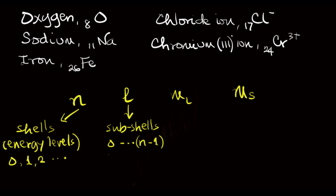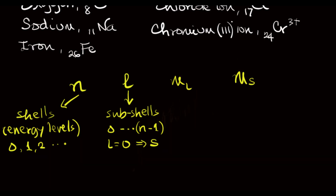When L is 0, we are talking about the s subshell. When L is 1, we talk about the p subshell. When L is 2, we are talking about the d subshell. And when L is 3, we are talking about the f subshell. This sounds familiar, right? The SPDF.